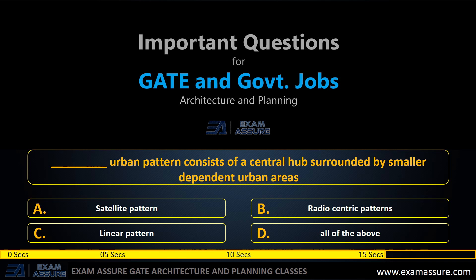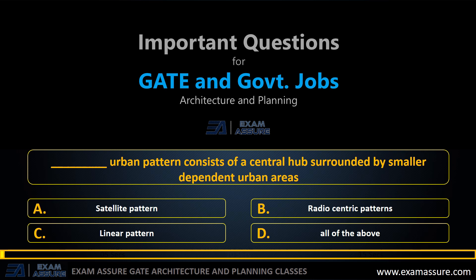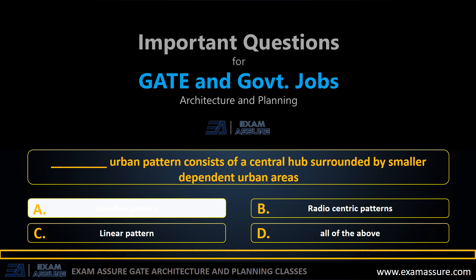Which urban pattern consists of a central hub surrounded by smaller dependent urban areas? Option A: Satellite pattern. Option B: Radio-centric pattern. Option C: Linear pattern. Option D: All of the above. The correct answer is: Satellite pattern.